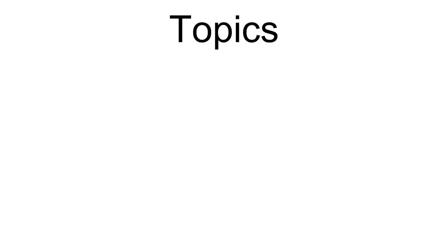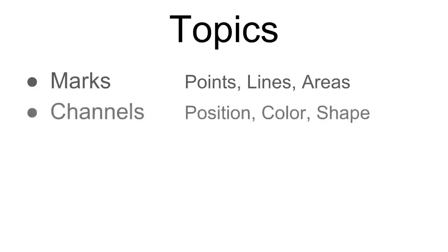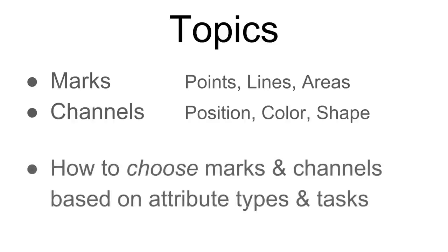The topics we're going to cover include marks, such as points, lines, and areas; channels like position, color, and shape; and also how to choose marks and channels based on attribute types that you have in your data and the tasks or questions that you want to be able to perform or answer.